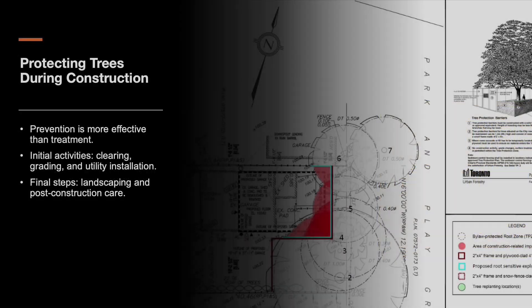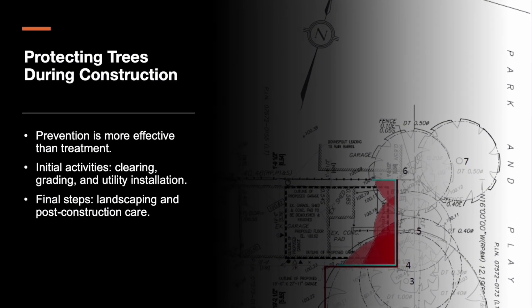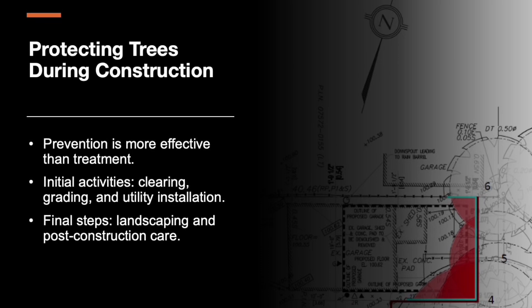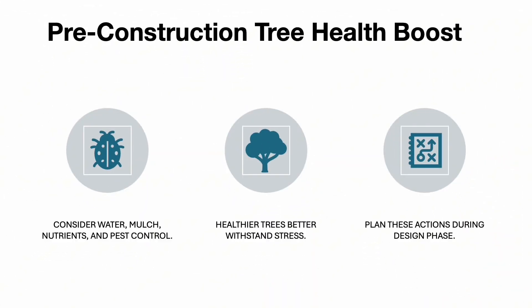Once the plan is in place, it must be enforced. Physical protection includes fencing, signage, and monitoring. Working in the tree protection zone should be avoided, or done with tree-friendly techniques. Before construction even begins, arborists may recommend mulching, irrigation adjustment, pest control, or nutrient management. Healthier trees withstand construction stress much better.